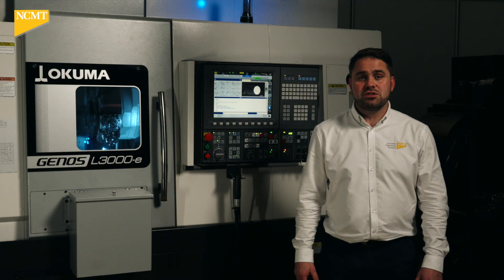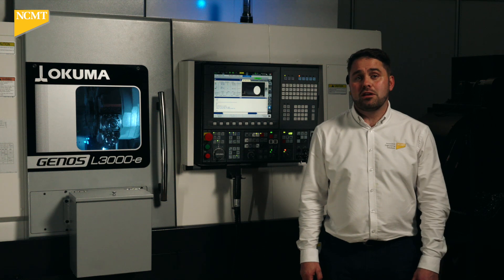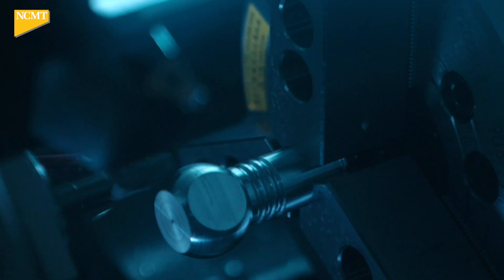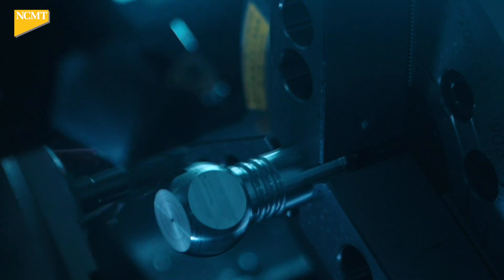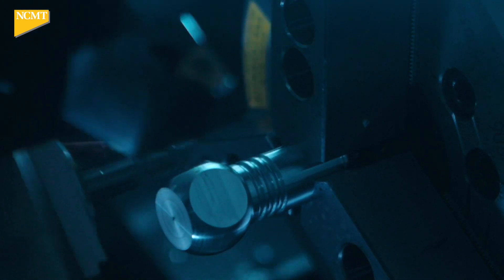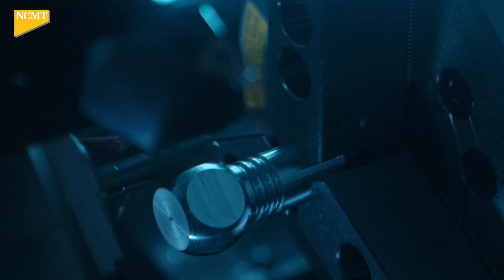This machine is also equipped with a parts catcher, so we can do a full productivity run coupled with the bar feeder. This machine is equipped with wraparound guideways, which means it's a very rigid machine. This gives you high productivity, allowing you to do heavy cutting and giving you more output.